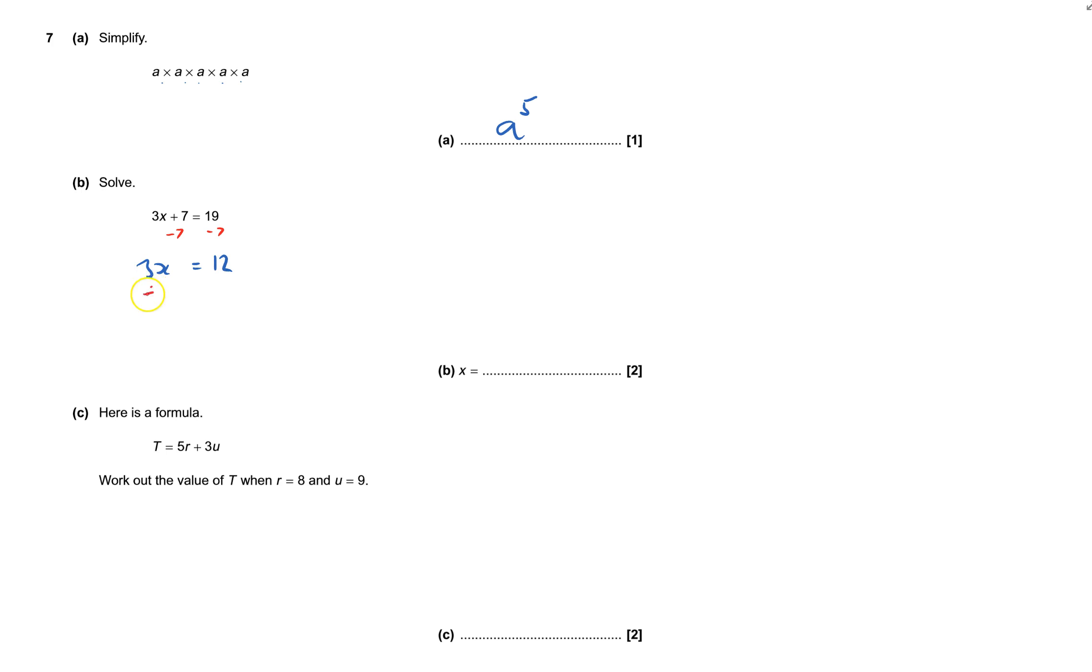I don't want 3 of them, I just want 1, so I'm going to divide both sides by 3. And that'll say that just 1x is 4, so x equals 4.